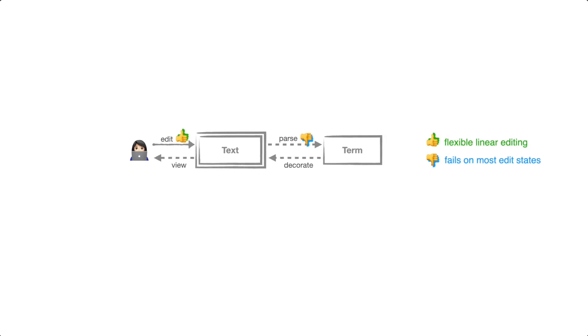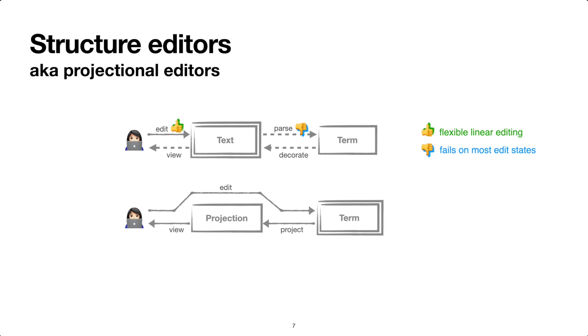Structure editors, also known as projectional editors, have long promised to improve this situation. In a structure editor, the programmer directly edits the term structure, ensuring that every edit state is a well-formed term. It may have holes for missing parts, but otherwise it's well-formed and so language-aware tooling can be consistently available.